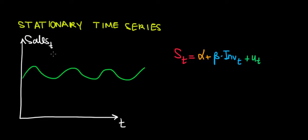First of all, let's have a look here graphically at an example of sales across time. The green line shows the evolution of sales across time. What does it mean to be stationary? It means that the value of the dependent variable, in this case sales, would fluctuate around an average value. Let's say that average value is somewhere over here, let's call that S bar.